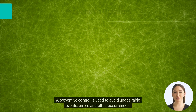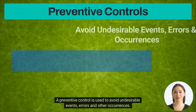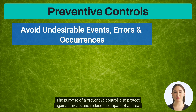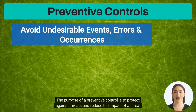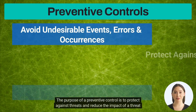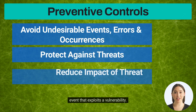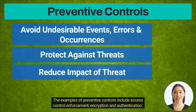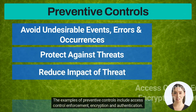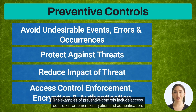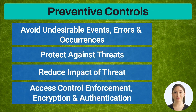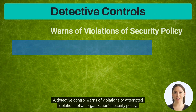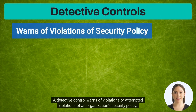A preventive control is used to avoid undesirable events, errors, and other occurrences. The purpose of a preventive control is to protect against threats and reduce the impact of a threat event that exploits a vulnerability. Examples of preventive controls include access control enforcement, encryption, and authentication.